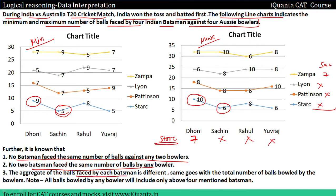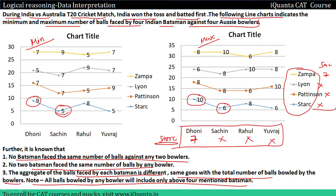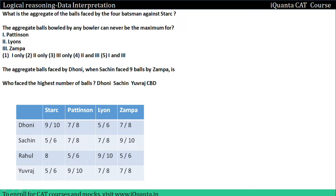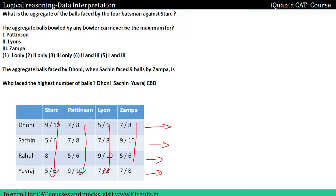The aggregate of balls faced by each batsman is different. So whatever the total number of balls faced by any particular batsman, all four batsmen's totals will be different. The same goes with the total number of balls bowled by any bowler — all four bowlers' totals will also be different. So row-wise values are all different and column-wise values are all different.